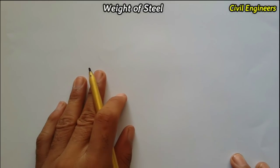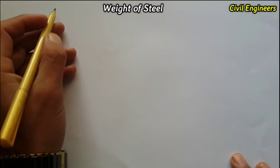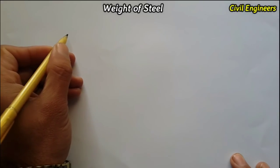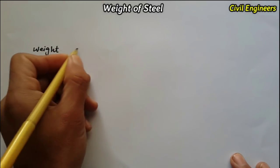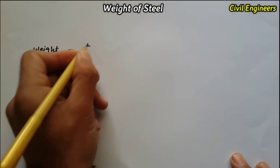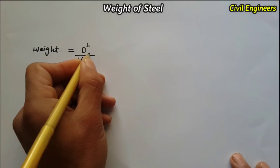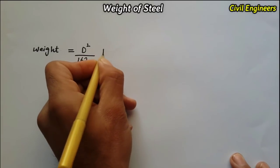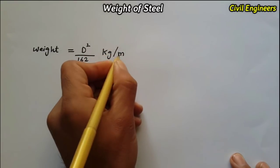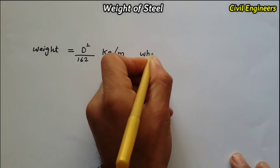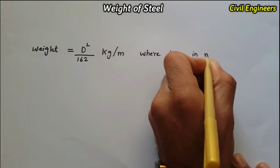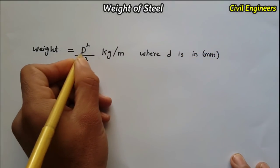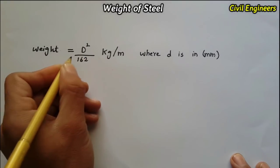First of all, let's find out the unit weight of steel in kg per meter. The formula is: weight equals D squared divided by 162, which gives us the weight in kg per meter, where D is in millimeters. So if you use any diameter of steel, use D in mm and it will give you the weight in kg per meter.